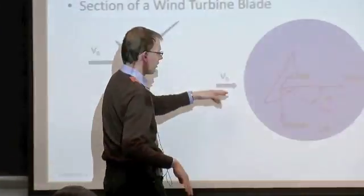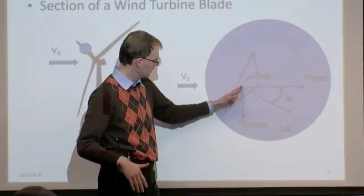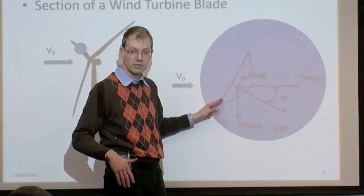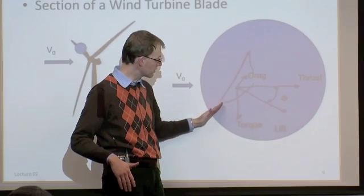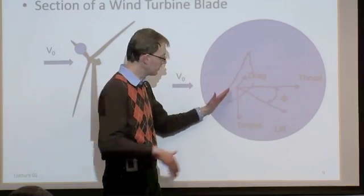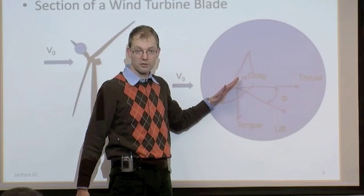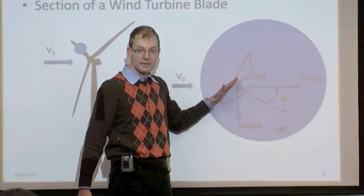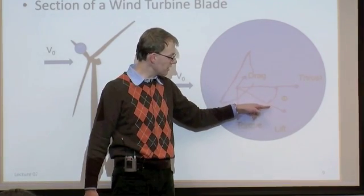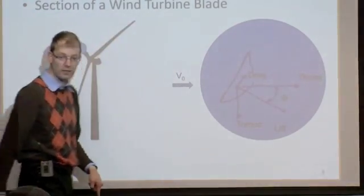So depending on the angle of attack that the airfoil operates at, well, if the drag is sketched in this direction, that means that the local velocity vector is in the direction of the drag. The lift is perpendicular to that. And we define the angle between the thrust direction and the local lift vector as the blade flow angle phi.